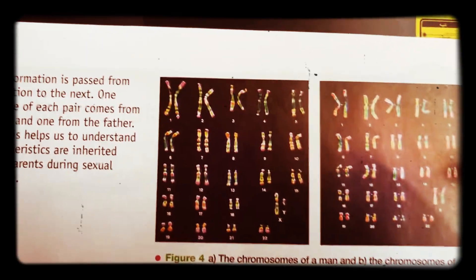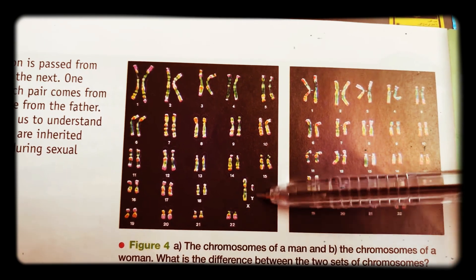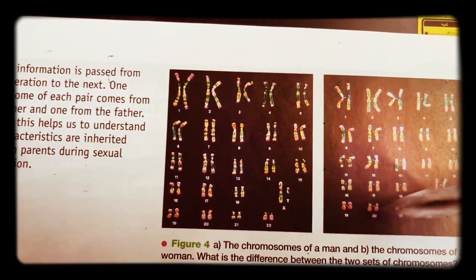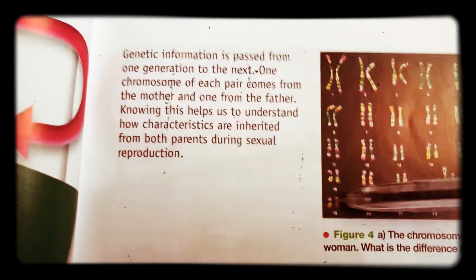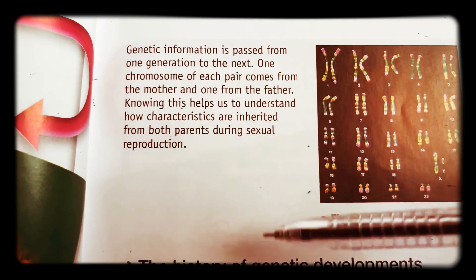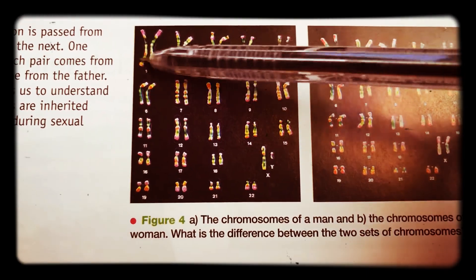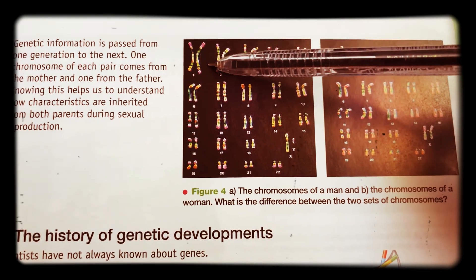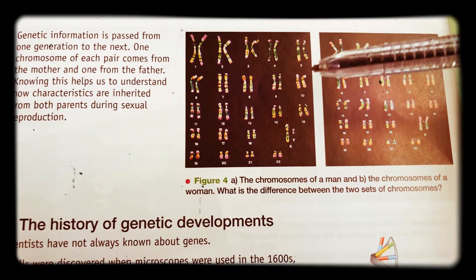You can arrange chromosomes in pairs. You'll notice that these are two sets — this one belongs to a man and this one belongs to a woman. You can see that one pair of chromosomes looks like an X and a Y, and this one looks like an X and an X. This is actually the genetic difference between male and female human beings. We pass this genetic information from one generation to the next — one of these chromosomes would be passed on from the mother and one from the father. This helps us understand how characteristics are inherited from both natural parents during reproduction.